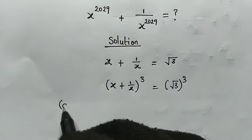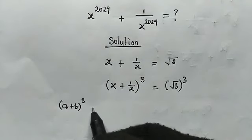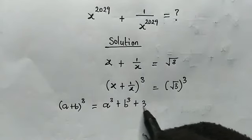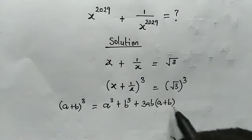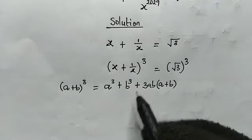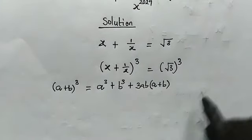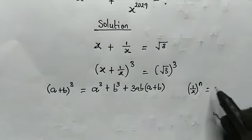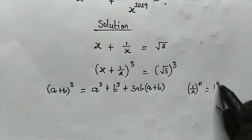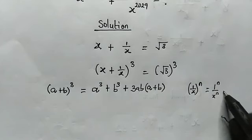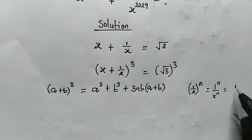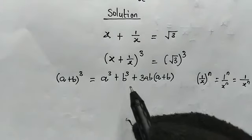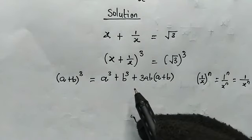From the left-hand side, let us make use of this property: A plus B cubed equals A cubed plus B cubed plus 3 times A times B into bracket A plus B. Take note: when we have 1 over x raised to the power of n, this can be written as 1 over x to the power of n. So 1 over x cubed is 1 over x cubed.